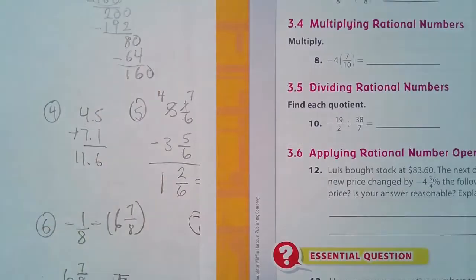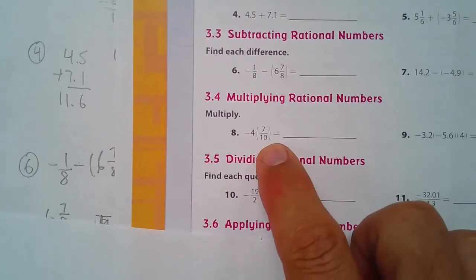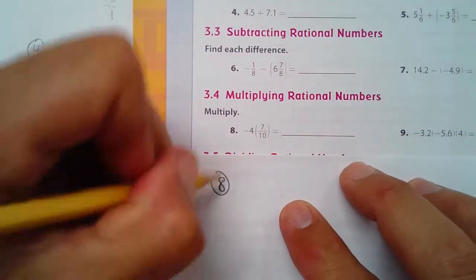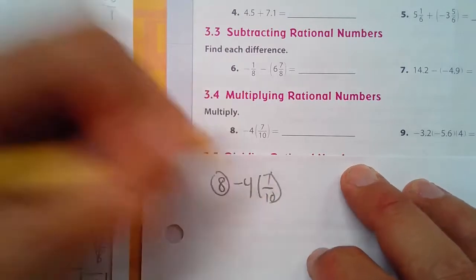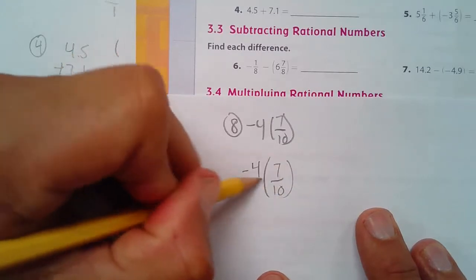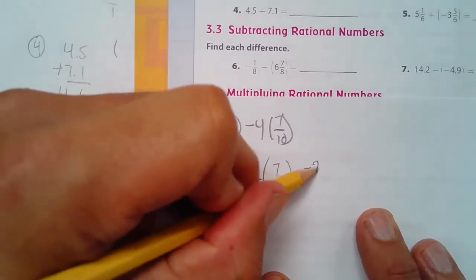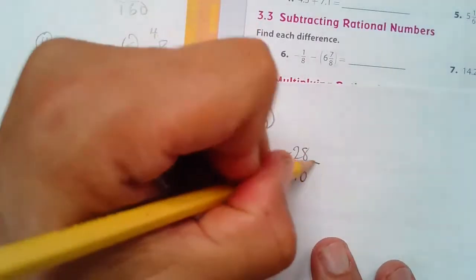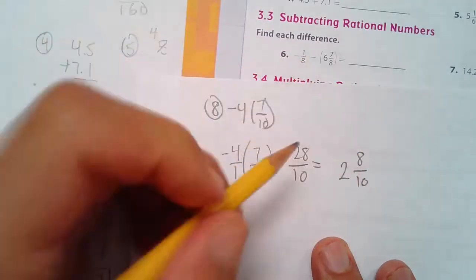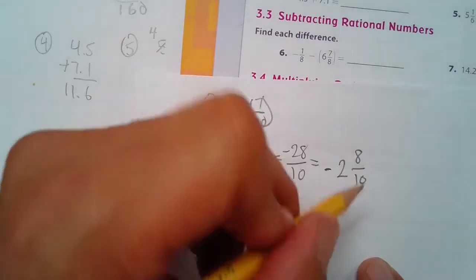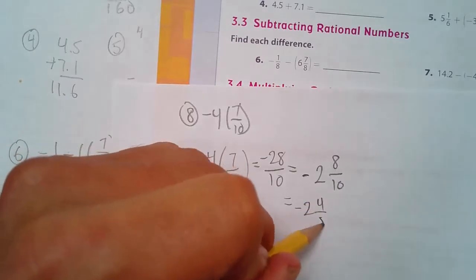Number 8. I have to multiply these two together. For number 8, negative 4 times 7/10. That's 4 over 1. You multiply the tops, and you get negative 28 over 10. 10 goes into 28 two times, with 8 left over. Remember, it's still negative. And simplify 8/10 to take half of both of those as 4/5. Equals negative 2 and 4/5.